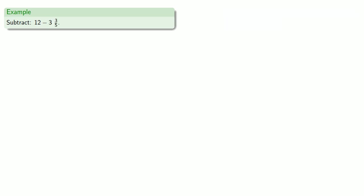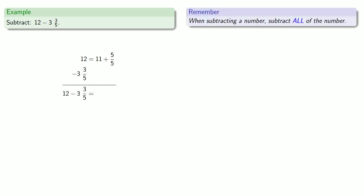How about 12 minus 3 and 3/5? Since we need to be able to subtract 5ths, then we can write 12 as 11 and 5/5. Now, I want to subtract 3 and 3/5. And the important thing to remember is that when you're subtracting a number, subtract all of the number. So I'm subtracting 3 and 3/5.